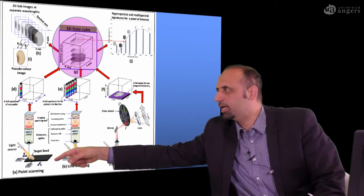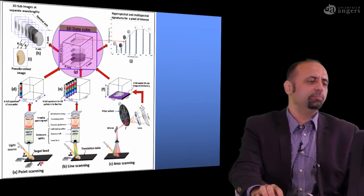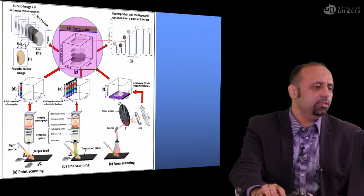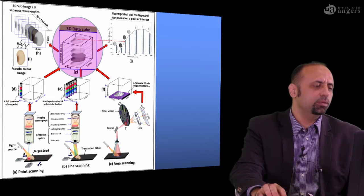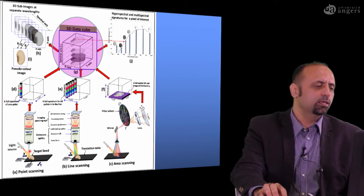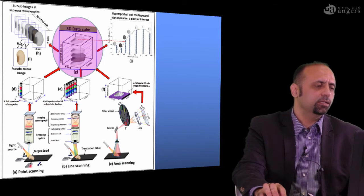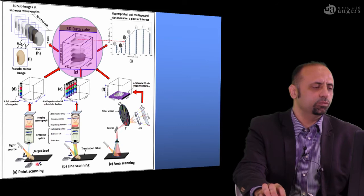The first method is called the point scan method. To acquire one image using point scan, you need to transfer your sample in both the X direction and the Y direction. You acquire spectra at one point, then move to another point and acquire another spectra, and so on, moving point by point through the sample.